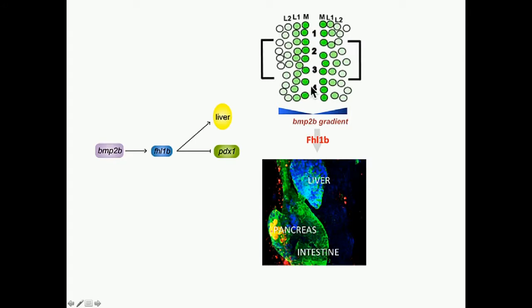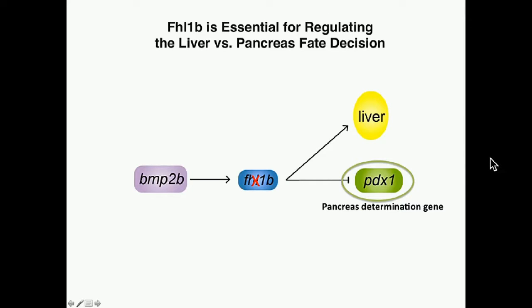In summary, we identified the BMP2B target gene FHL1B and showed that it is essential for regulating the liver versus pancreas fate decision. Without FHL1B, the PDX1 expression domain — especially high-level PDX1 expression — is dramatically increased.